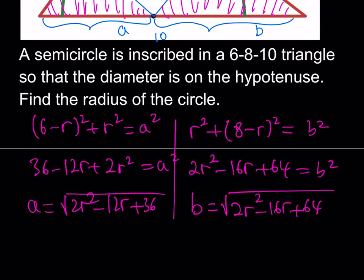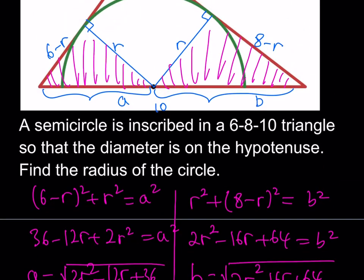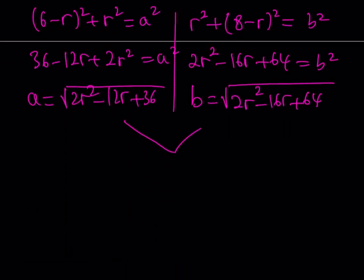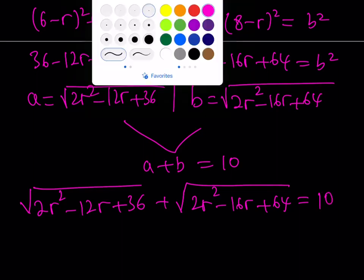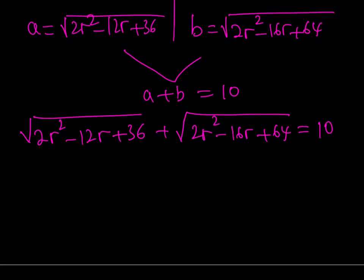Now I have a and b. They make up the hypotenuse, and the hypotenuse is 10, so a plus b equals 10 — that's how we put it together. This is a radical equation, but we're going to turn it into a quadratic equation by squaring both sides.